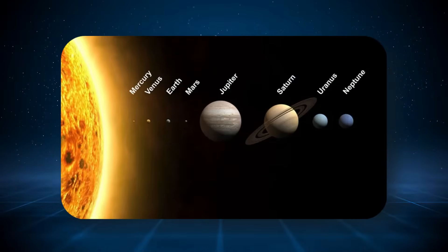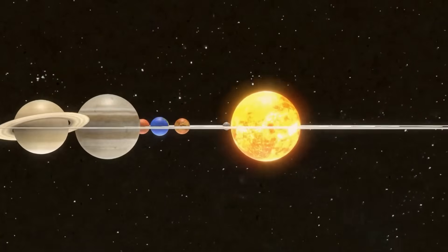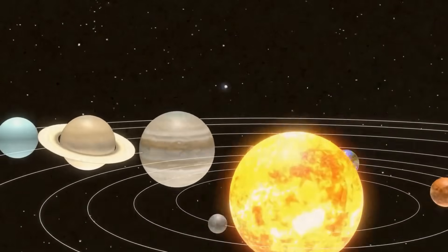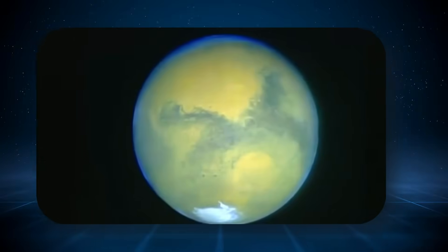Neptune, the eighth planet from the sun and the farthest known gas giant in the solar system, has always been a subject of fascination due to its vivid blue color, dynamic atmosphere, and mysterious internal structure.